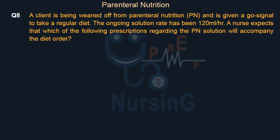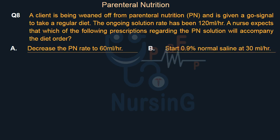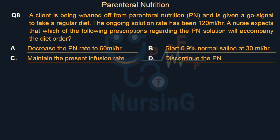A client is being weaned off from parenteral nutrition (PN) and is given a go signal to take a regular diet. The ongoing solution rate has been 120 ml per hour. A nurse expects that which of the following prescriptions regarding the PN solution will accompany the diet order? Option A: Decrease the PN rate to 60 ml per hour. Option B: Start 0.9% normal saline at 30 ml per hour. Option C: Maintain the present infusion rate. Option D: Discontinue the PN.